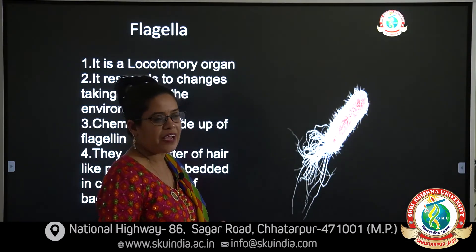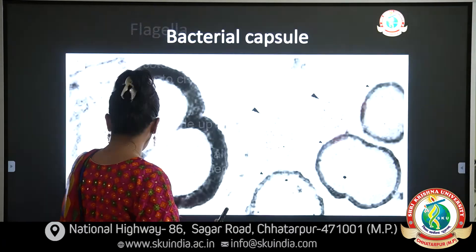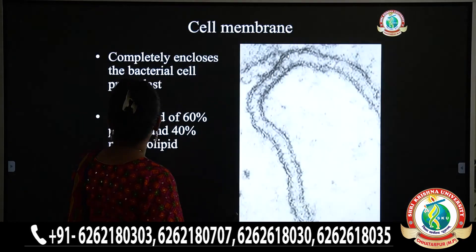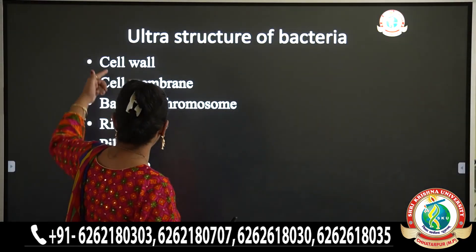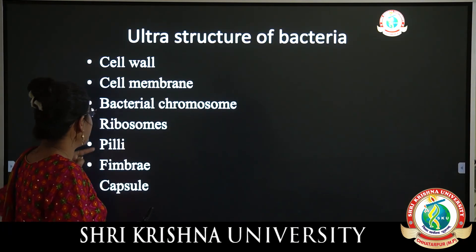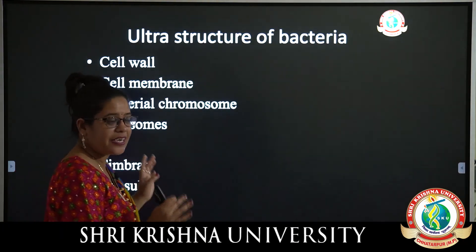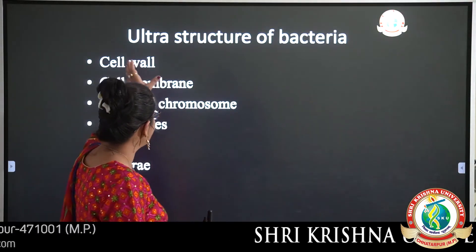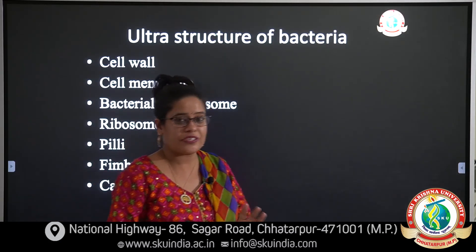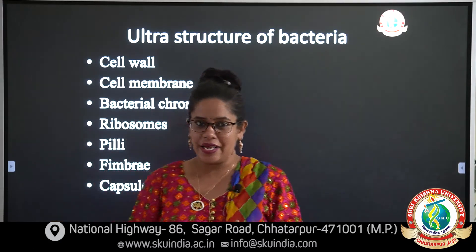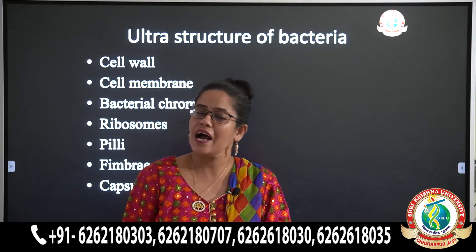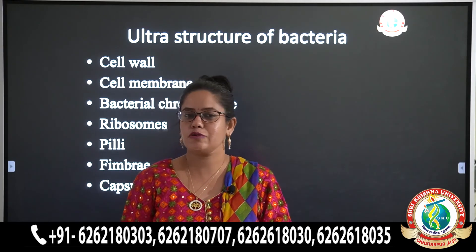We have now studied various ultrastructures of bacteria in detail: the cell wall, cell membrane, bacterial chromosome, ribosomes, pili, fimbriae, and capsule. These structures play a very important role in answering the question of how bacteria can live in any sort of environment, including harsh and extreme environmental conditions. Thank you.